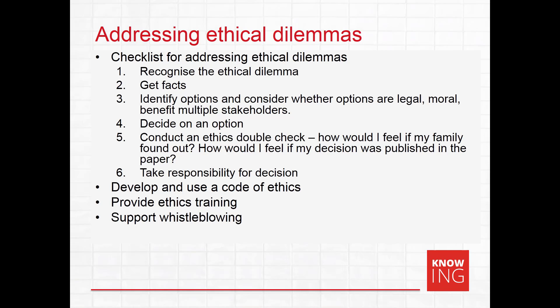As well as a checklist for making ethical decisions, there are a few other ways that organisations can try to ensure ethical decision-making. Organisations might develop and use a Code of Ethics, which is a formal statement of the rules and standards expected of people within the organisation. The Code of Ethics might incorporate organisational ethical standards as well as those from within that industry or profession, such as doctors having their own Code of Ethics. Whether a Code of Ethics will actually improve ethical decision-making will depend on whether it is actually used.